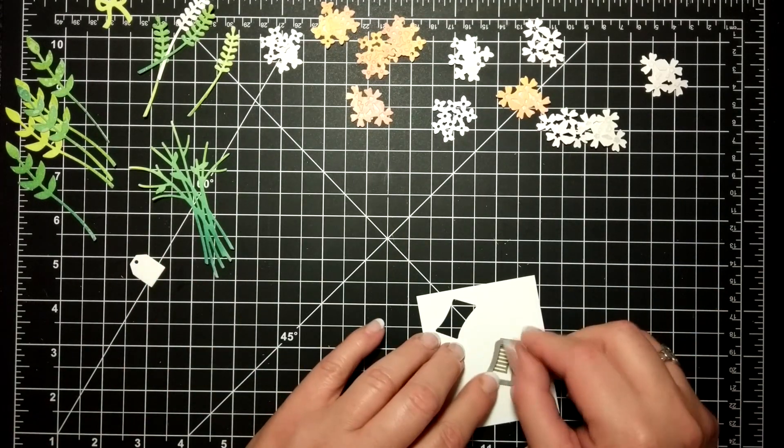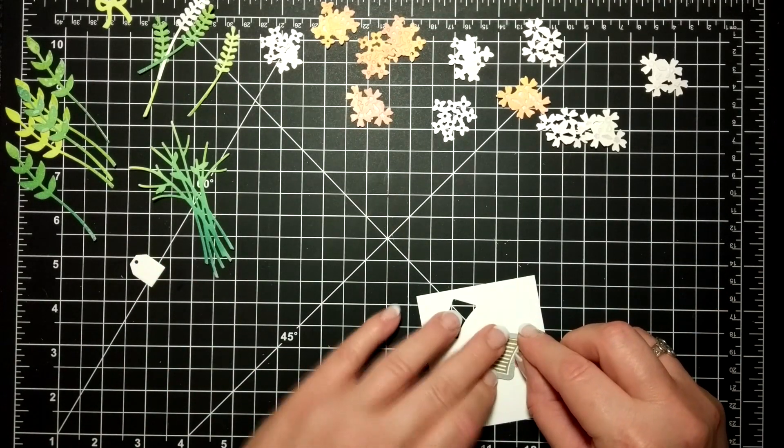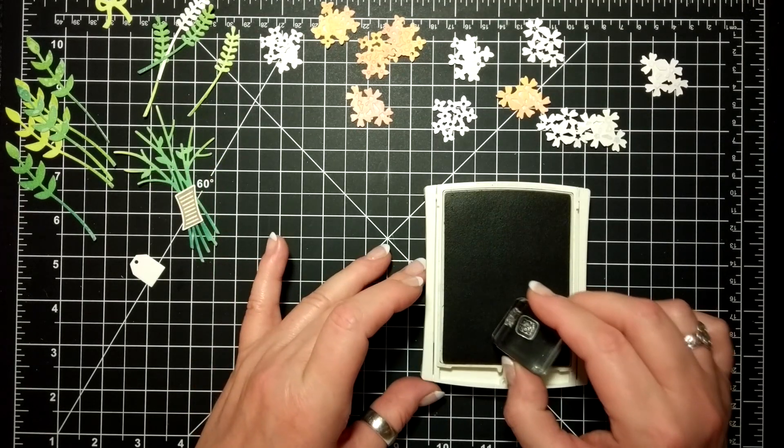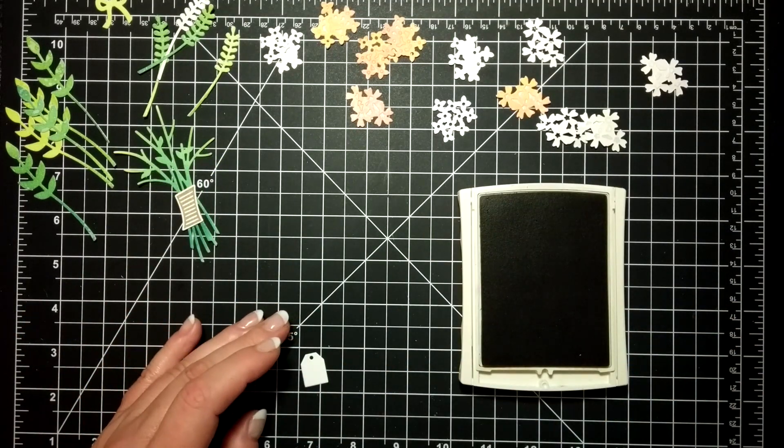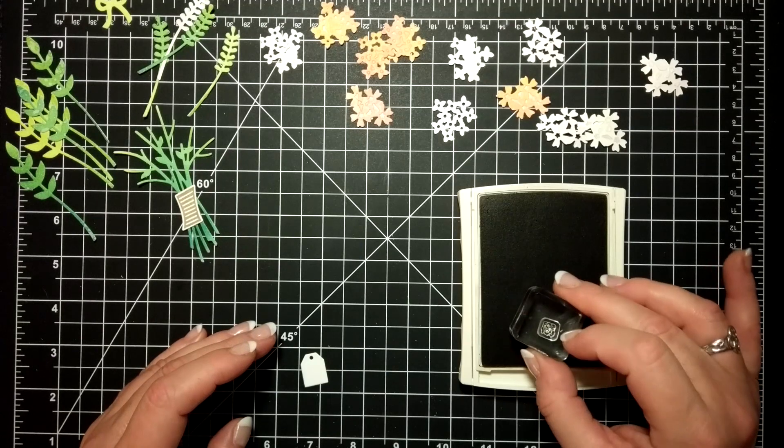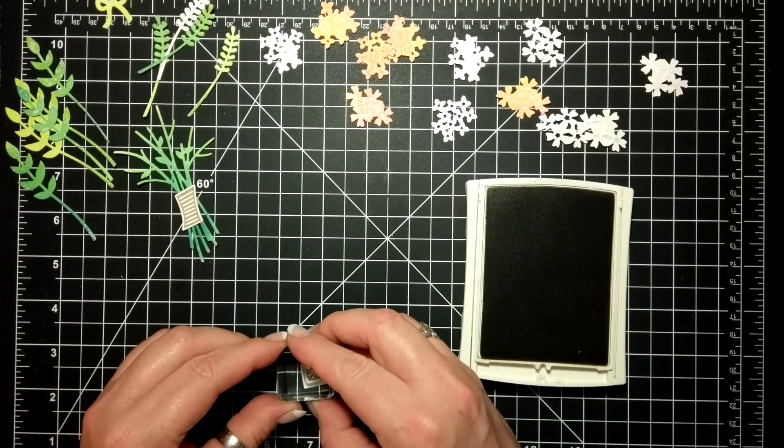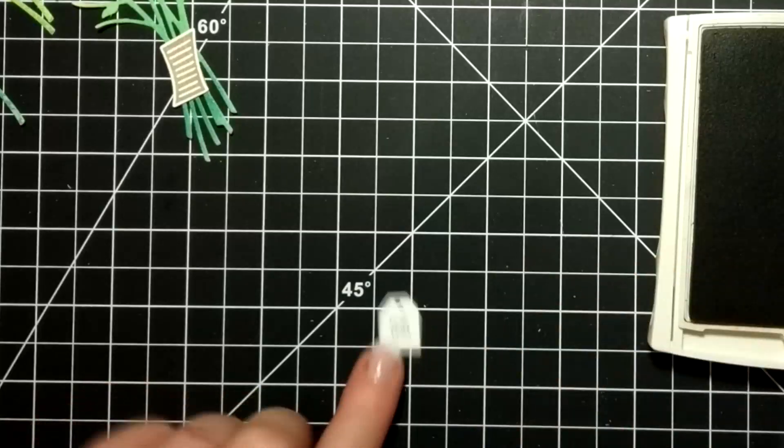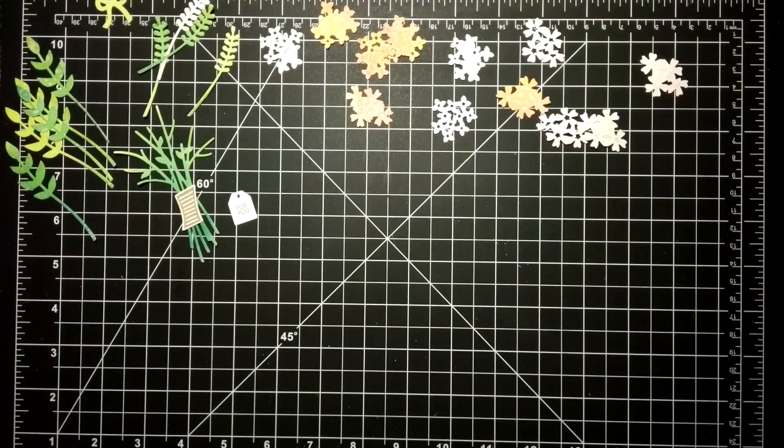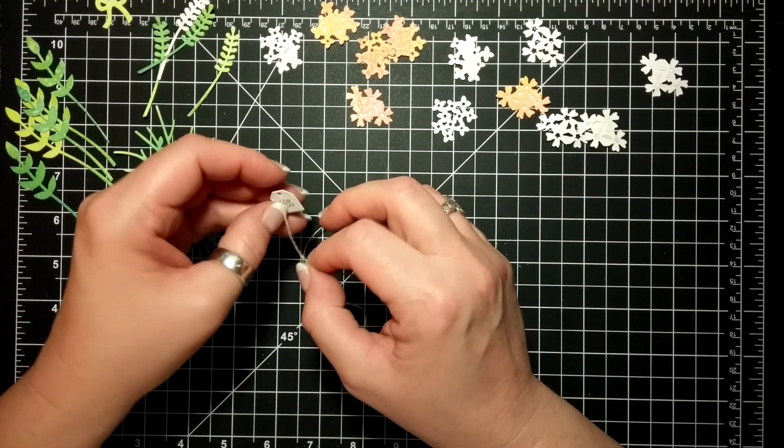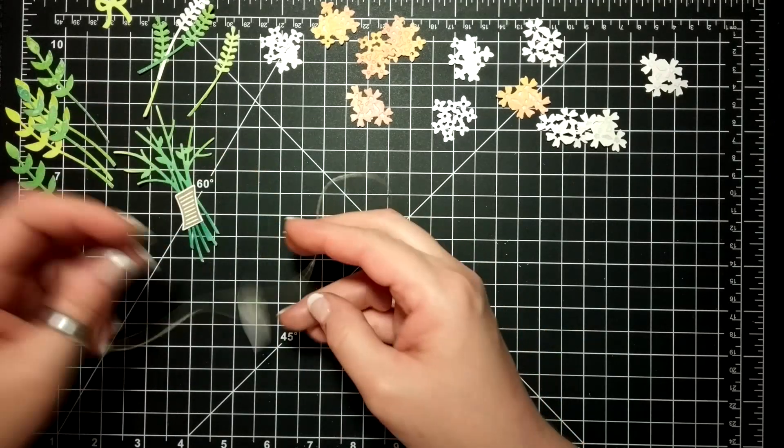I also did that little note and this is the wrap that goes around the bouquet. I took my Crumb Cake ink and I stamped the 'for you'—watch out for a close-up. There it is, because it's so tiny, it's so cute.